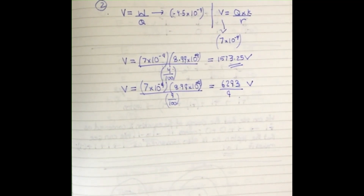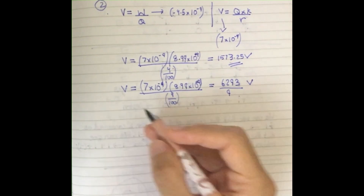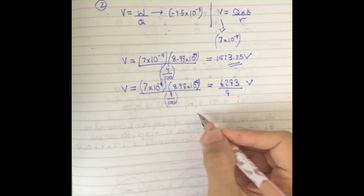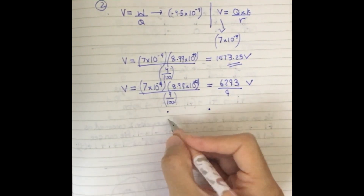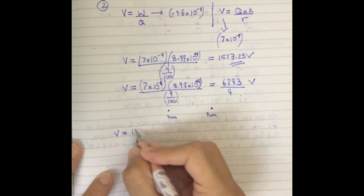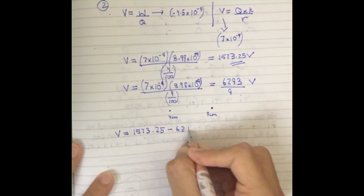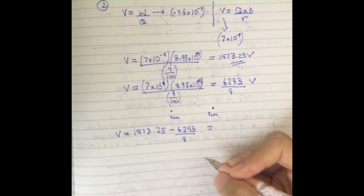Now I subtract the two potentials to find how much the electric potential changed as the charge moved from 4 cm to 9 cm. So I get 1533.25 minus 6293/9, which gives the change in electric potential.